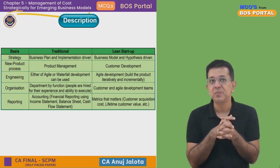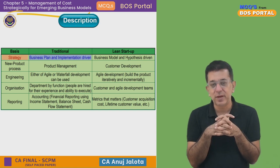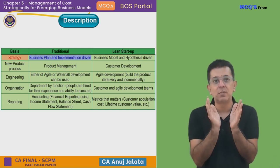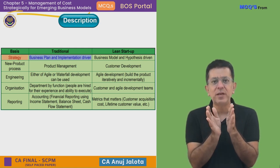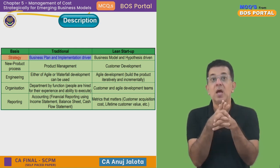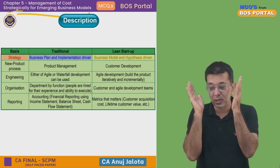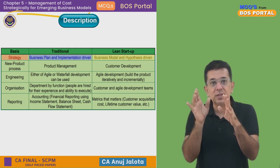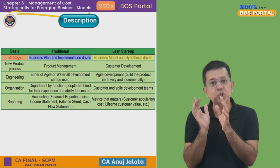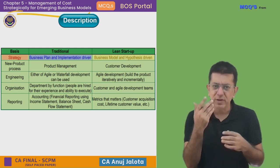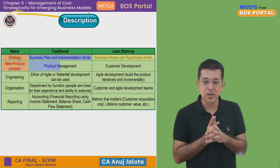In the comparison: traditional companies are strategy, business plan, and implementation driven — they follow a plan that has given them success in the past. Lean startups are business model hypothesis driven — they think 'this should work,' and if it doesn't, they try something else. For new product process, traditional companies use product management, while lean startups focus on customer development.